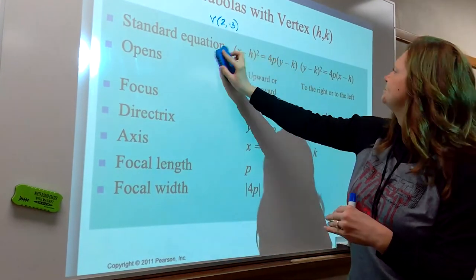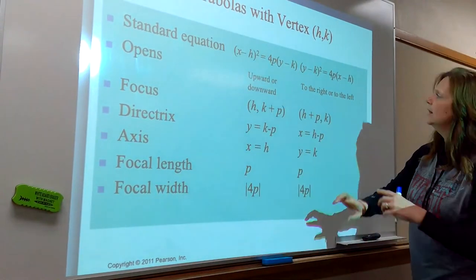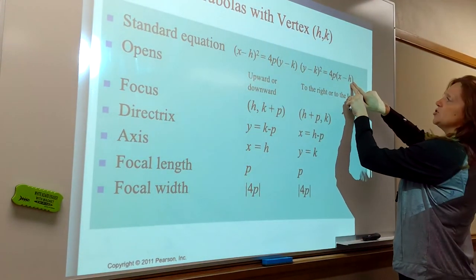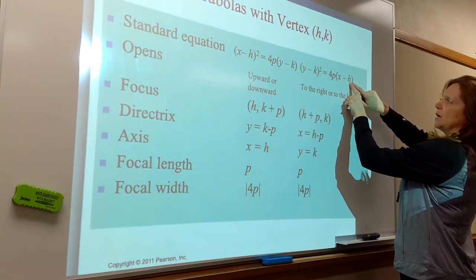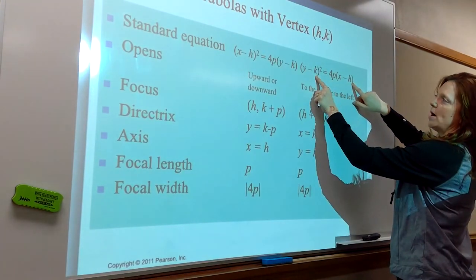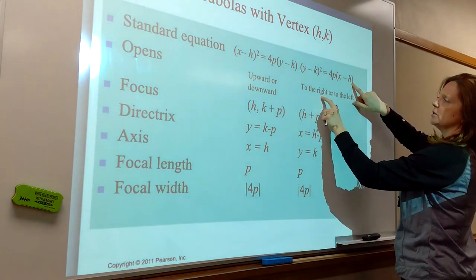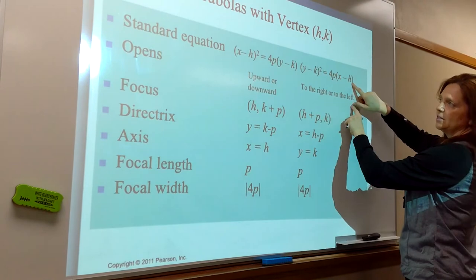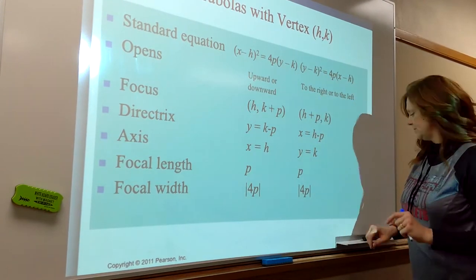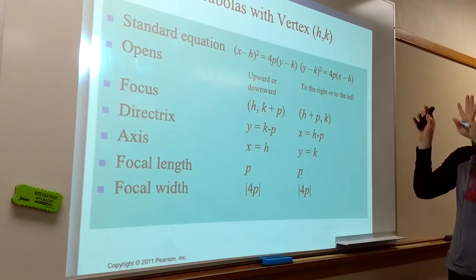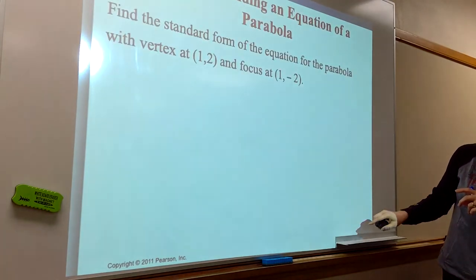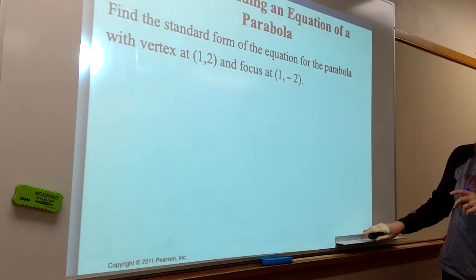For parabolas opening left or right with a shifted vertex, the h goes with the x and k goes with the y: (y − k)² = 4p(x − h). If the coefficient is positive, it opens right; if negative, it opens left. Keep this as a reference when working on these problems — there's lots of information there.